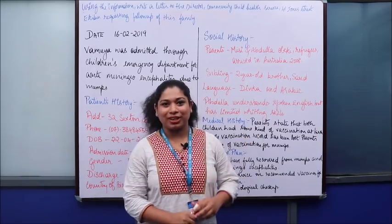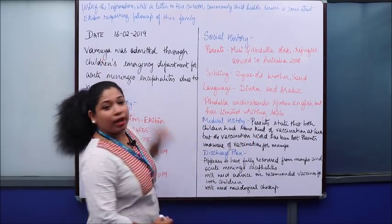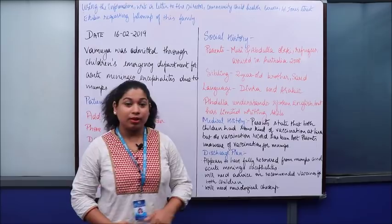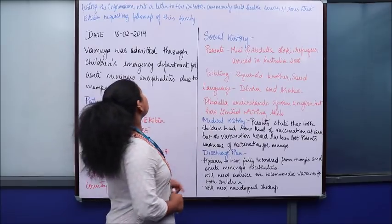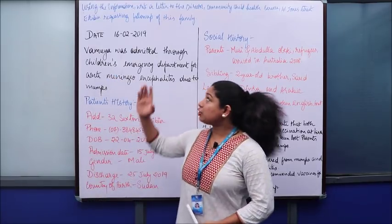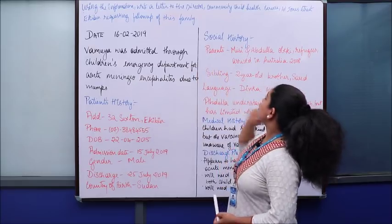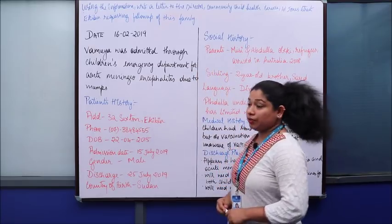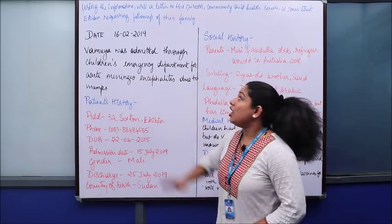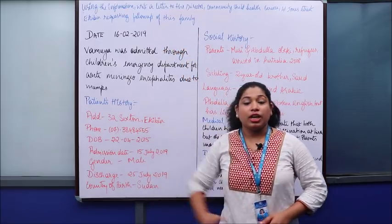So let's get started. According to the writing task, it says: using the information, write a letter to the Director, Community Child Health Service — and then they have given an address — regarding follow-up of this family.